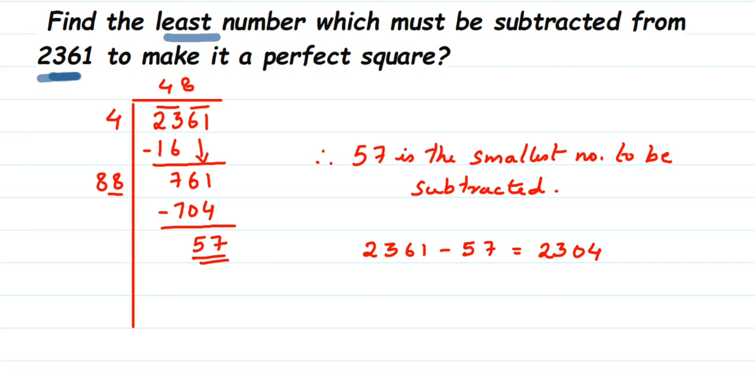2304. Now how to find out this number? 2304 is a perfect square number. And if you want to find out the square root of this number, it is very simple. Whatever answer you got here in the quotient, that is the square root of that number. So 48 is the square root of this given number. So you don't have to again calculate it.